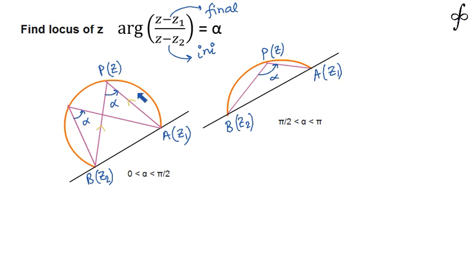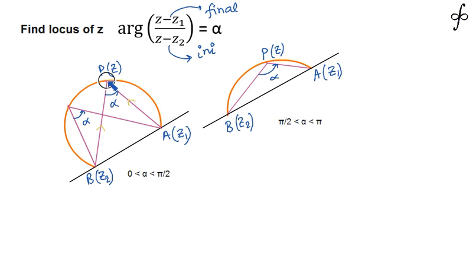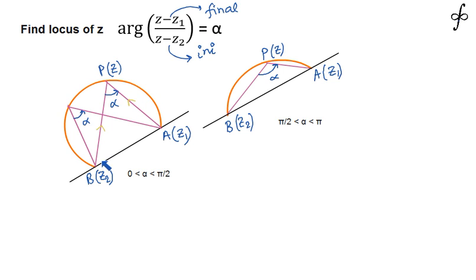I have already considered the figure where A and B are given fixed complex numbers, and z is a variable locus point representing the complex number z. The final vector drawn is z - z1 and the initial vector is z - z2. According to the condition, z - z2 rotated about the pivotal point P by angle alpha reaches the direction of z - z1.